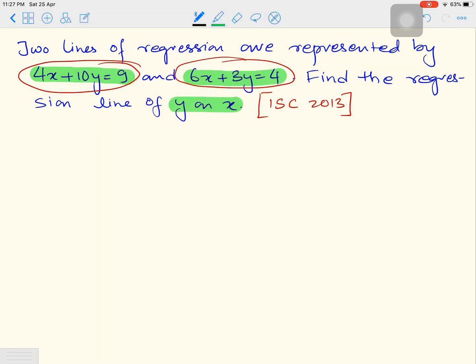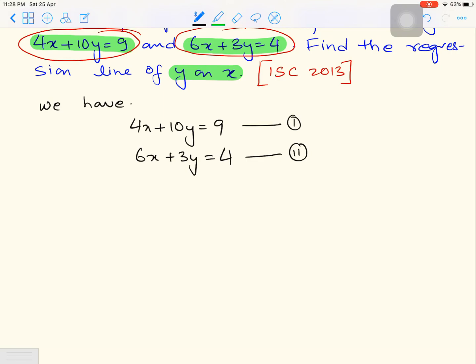We start the sum. We have 4x plus 10y equals to 9, that's equation 1. 6x plus 3y equals to 4, that's equation 2. Let us say equation 1 is regression equation of y on x, just a guess, and equation 2 be x on y.